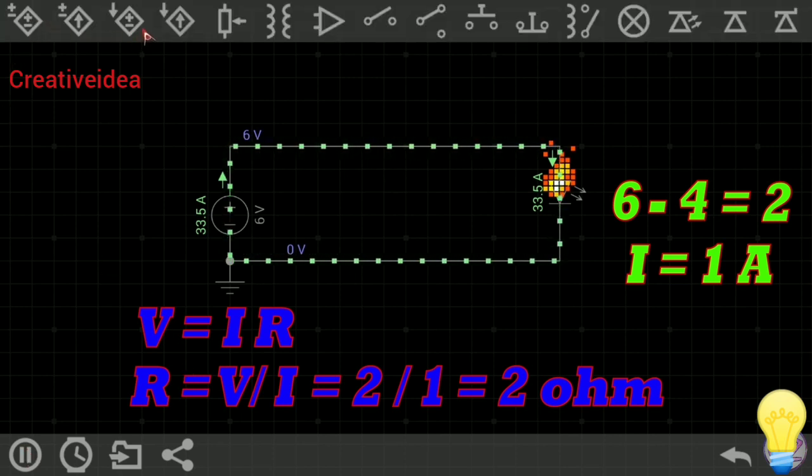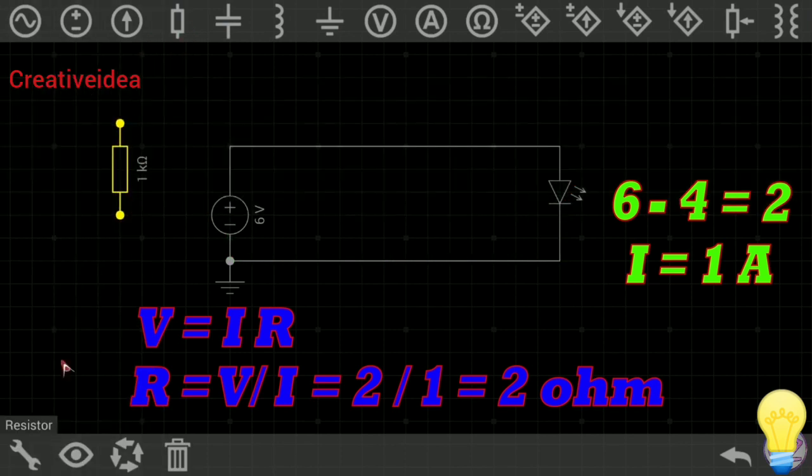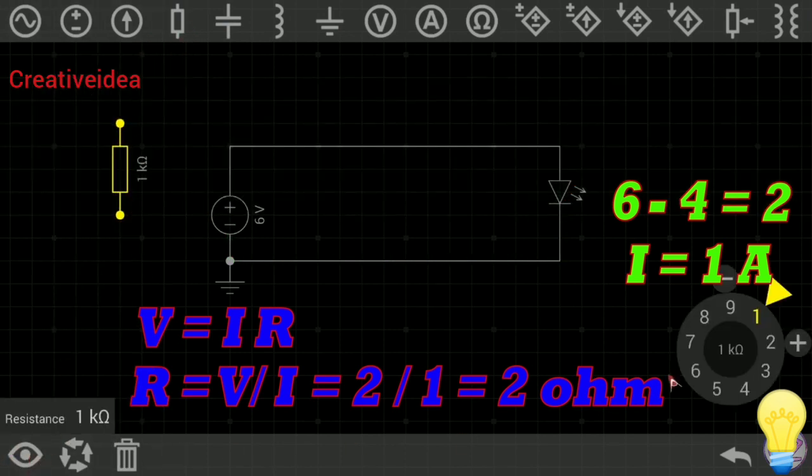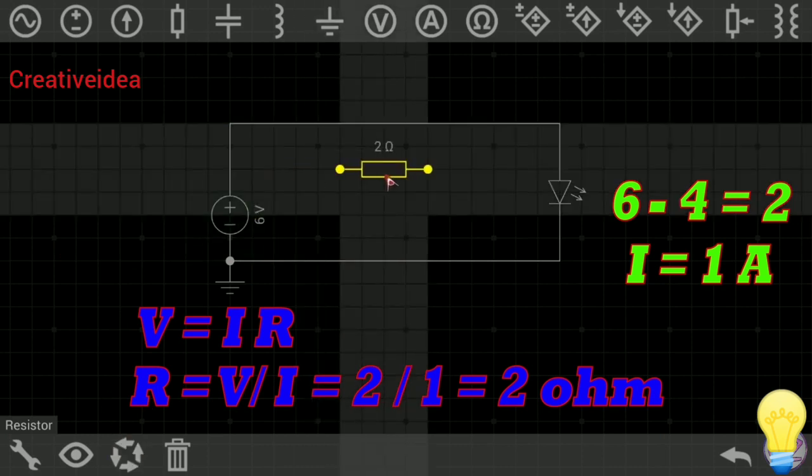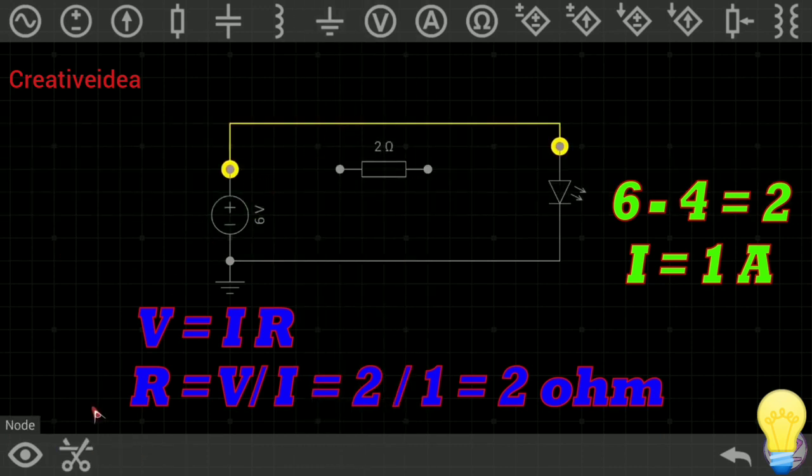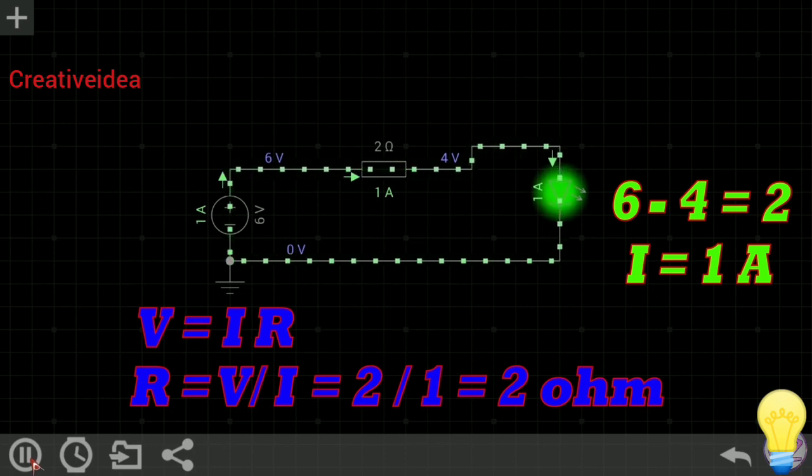Let's see. Taking a resistor. It's 1K Ohm. So, need to change this value to 2 Ohm. Done. Now, just connecting this resistance with LED. All done. I'm just playing it. See, LED is glowing perfectly.